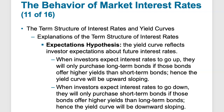The Expectations Hypothesis is about a kind of self-fulfilling philosophy. If you expect higher inflation and higher rates, you trade in accordance with those expectations, and the results of the trading actually create that expectation. If you expect interest rates to go up, you'd purchase long-term bonds offering higher yields than short-term bonds, making the yield curve more upward sloping. When investors expect rates to go down, they purchase short-term bonds because those offer higher yields than longer-term bonds, making the yield curve downward sloping.